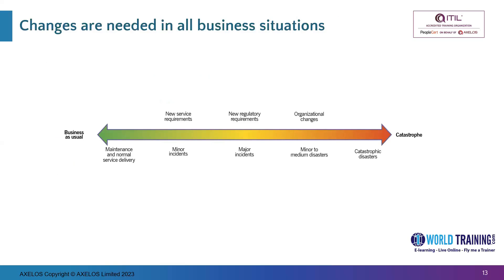Changes are needed in all business situations. We need to understand what a change is. A change is the addition, modification, or removal of anything that could have a direct or indirect effect on services. For example, an application may have to be upgraded, or there could be some other situation — all those are forms of changes. This practice helps to build and maintain an organizational environment that supports creating intended outputs and achieving intended outcomes.